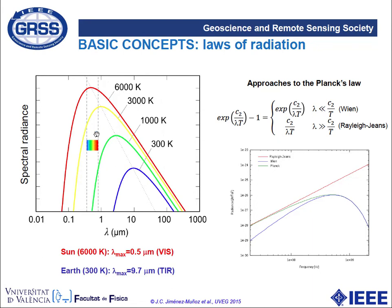The graph shows spectral radiance for different temperatures according to Planck's law. We can observe the maximum peak, which moves to longer wavelengths as temperature decreases. Applying Wien's displacement law for the sun at approximately 6000 Kelvin gives a peak near 0.5 microns in the visible region. For Earth's temperature of approximately 300 Kelvin, the peak is around 9.7 microns, located in the thermal infrared region.